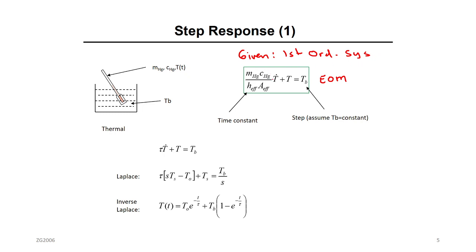Don't worry about all the constants here. This entire coefficient is a constant, and I'm going to call it tau because this is, in fact, your time constant. The dynamic system output is the reading temperature T from the thermometer. The input, or forcing function, is the bath temperature Tb.